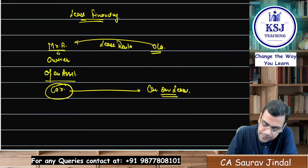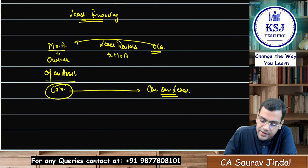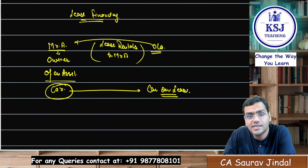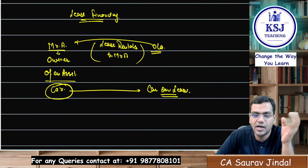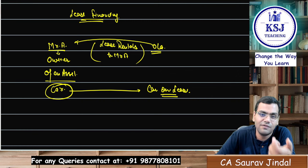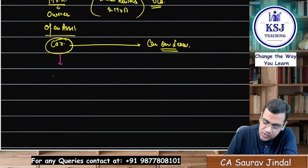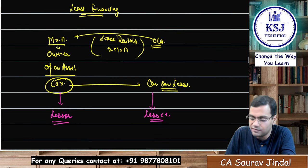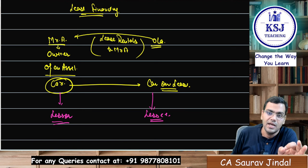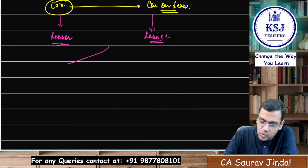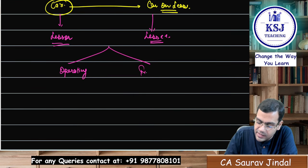Mr. A here is known as the lessor — the owner of the asset — and Ola is the lessee — the one who uses the asset and pays lease rentals to the lessor. Broadly, there are two major types of lease: one is the operating lease and the other is the financial lease.